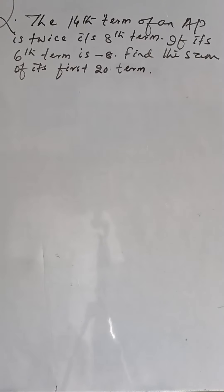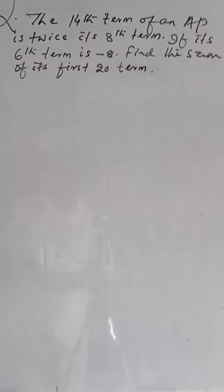The 14th term of an AP is twice its 8th term. If its 6th term is minus 8, find the sum of its first 20 terms.